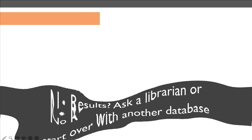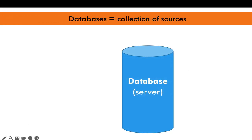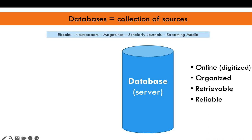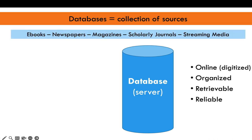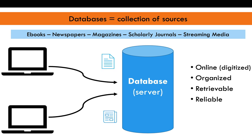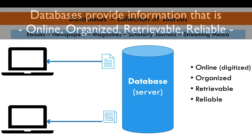Just to review, a database is a collection of sources that are online, organized, retrievable, and generally reliable. For example, database content varies — whether e-books, newspapers, magazines, scholarly journals, or streaming media.